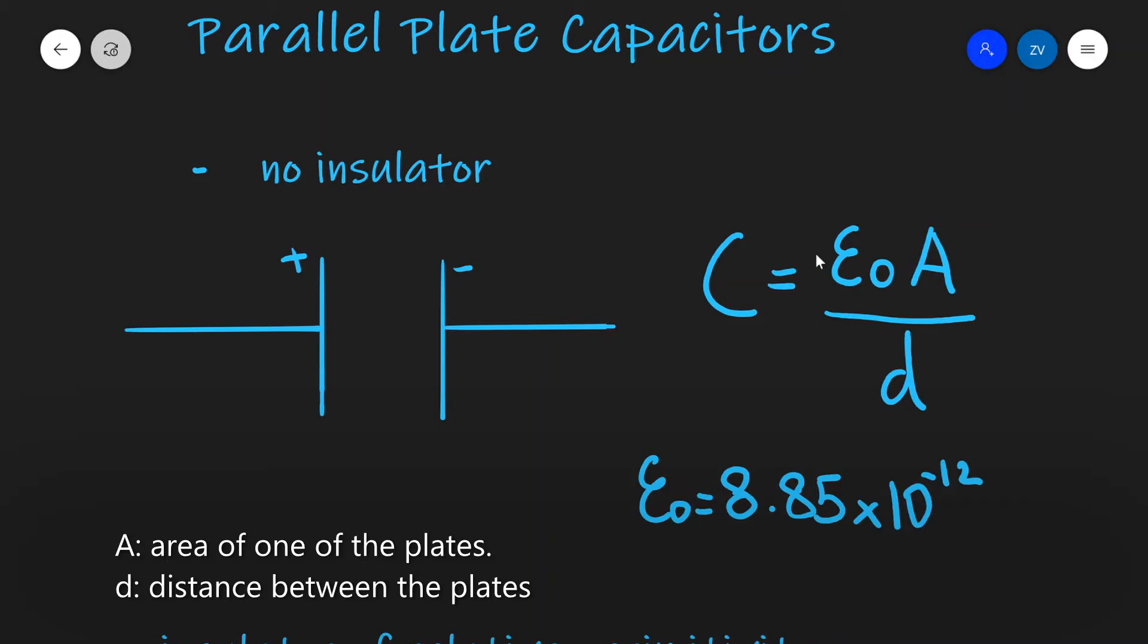The constant of proportionality for a parallel plate capacitor with no insulator is just the permittivity of free space which is 8.85 times 10 to the power of minus 12 in standard units.